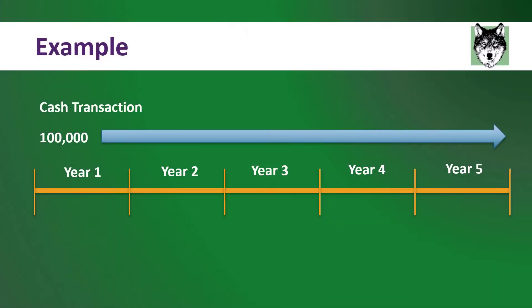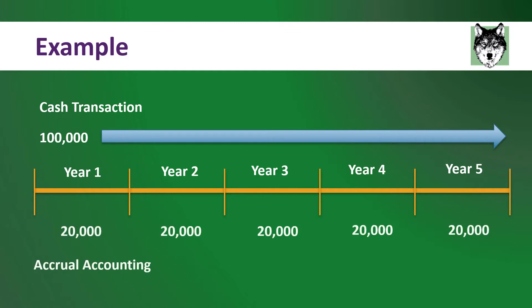Let's use a simple example. Imagine you bought equipment for a hundred thousand dollars that you're going to use for five years. We're going to use straight-line depreciation just to keep things simple, although there are many different methods you can use. With straight-line depreciation, you would use twenty thousand dollars of that investment each year for the next five years. So you're taking a multi-year asset and splitting it up so you can report on it each year.